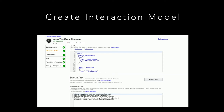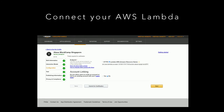The Alexa Skill Kit requires you to define some interaction model — like how Alexa hears your voice and maps it into some intent or query. You also need to define the AWS Lambda ID and connect it by inputting this ID so Alexa can contact your created AWS Lambda.